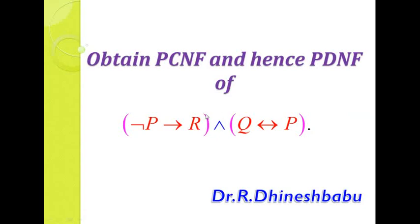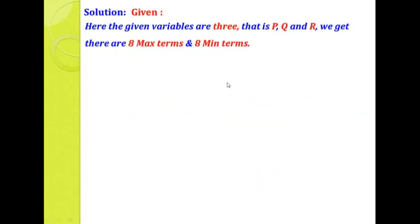Before we solve this problem, we should know how to write max term and min term for the given problem. In the given problem, there are three variables: P, Q, R only. Using these three variables, I am going to write 8 max terms and 8 min terms, each containing three variables only — the given variables and their negations. We should not get any same variable and its negation in the same term; all max terms and min terms are different terms only.